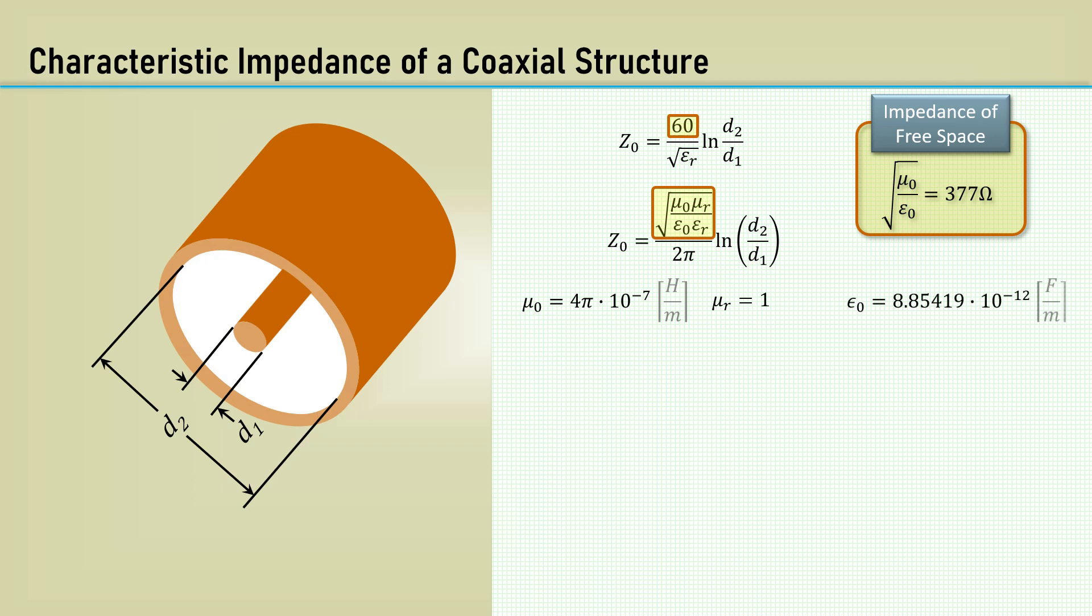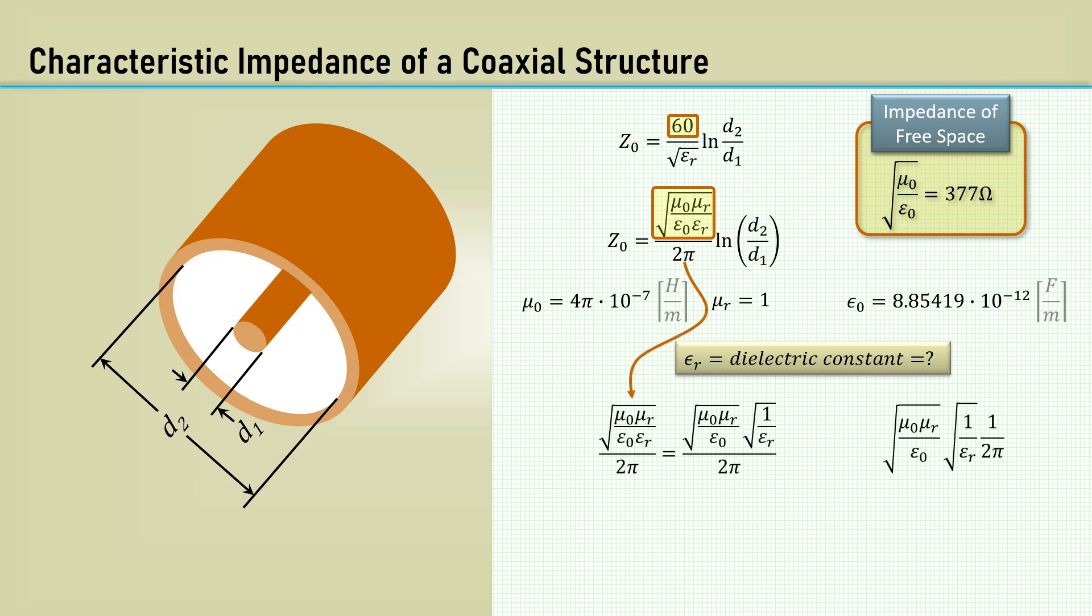The permittivity constant, epsilon naught, is 8.85 times 10 to the minus 12. But it's a coax, so you have some sort of dielectric to keep the center conductor in place, and it will have a value of relative permittivity, also called the dielectric constant, and is intended to be an input variable to this impedance formula. Having that said, let's just work with the front of the formula. We will need to pull epsilon r out of the radical. Plugging in the physical constants, we get 59.9585 ohms.